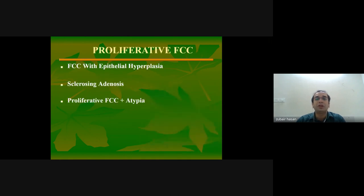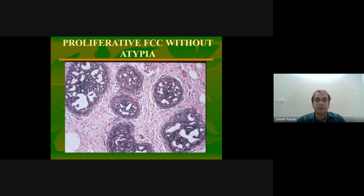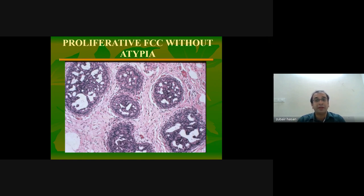Fibrocystic change can also have a proliferative form, including fibrocystic change with epithelial hyperplasia, sclerosing adenosis, and fibrocystic change with atypia. It is important to remember that fibrocystic change per se is not a pre-malignant condition. A feature of benignity is irregularly shaped ductal spaces — irregular shapes indicate benign, whereas a uniform cookie-cutter pattern can indicate DCIS.